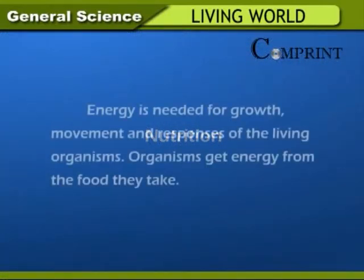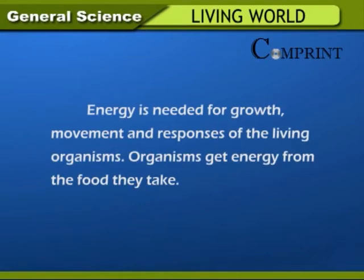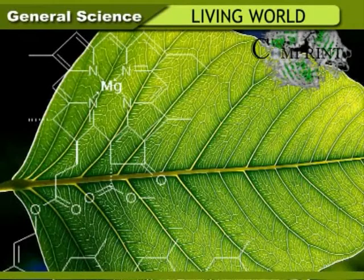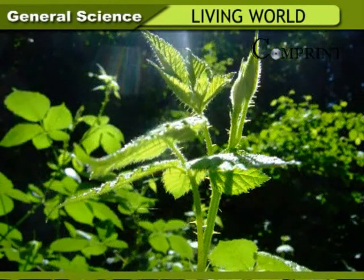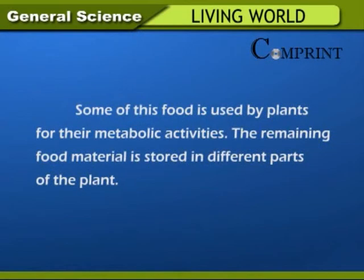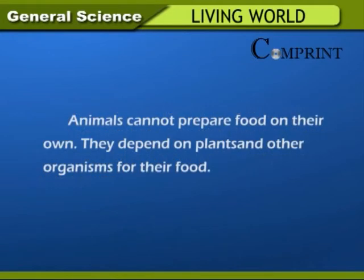Nutrition. Energy is needed for growth, movement, and responses of the living organism. Organisms get energy from the food they take. Green plants prepare their food by the process of photosynthesis. The food is prepared in the chloroplasts which are present in the green leaves. Water and carbon dioxide are supplied to chloroplasts to prepare food in the presence of sunlight. Some of this food is used by the plants for their metabolic activities and the remaining is stored in different parts of the plant. Animals cannot prepare food on their own; they depend on plants and other organisms for their food.